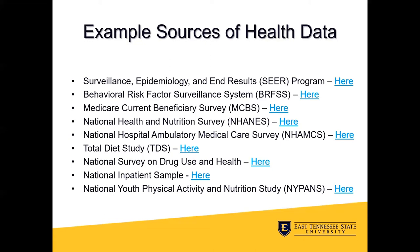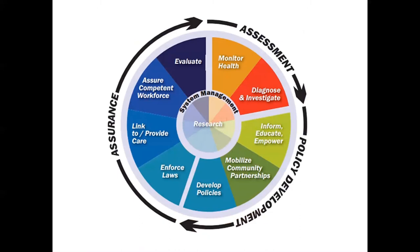Listed here are some examples that are commonly used for research in public health. You can click the links in the slide to navigate to where they are housed. Biostatistics and data work are applied to every aspect of public health. The wheel here represents the 10 essential services of public health, and data management and analysis are important to the work within each of these services.